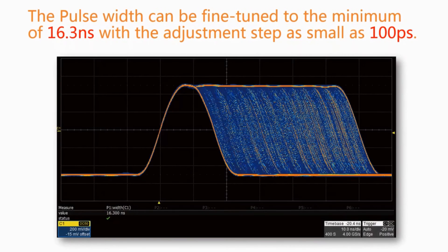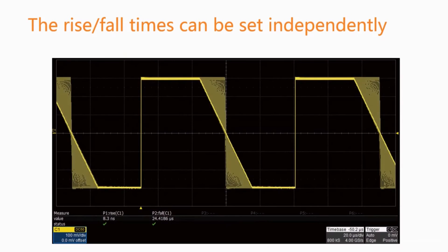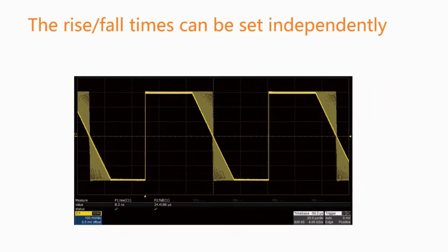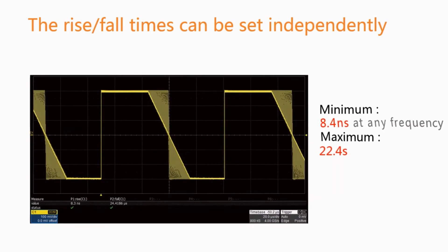The pulse width can be fine-tuned to a minimum of 16.3 nanoseconds with an adjustment step as small as 100 picoseconds. The rise and fall times can be set independently to a minimum of 8.4 nanoseconds at any frequency, with a maximum of 22.4 seconds. The adjustment step is as small as 100 picoseconds.